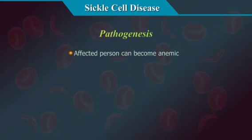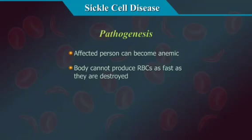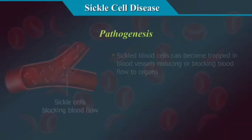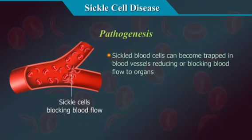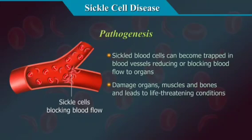The affected person can become anemic because the body cannot produce RBCs as fast as they are being destroyed. Also, sickled blood cells can become trapped in blood vessels, reducing or blocking the blood flow. This can damage organs, muscles, and bones, and may lead to life-threatening conditions.